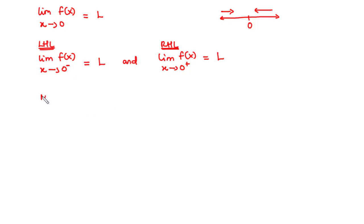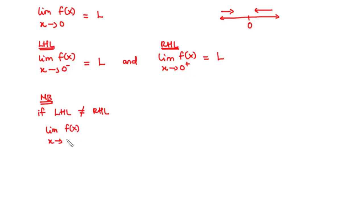Notice that if the left-hand limit is not equal to the right-hand limit, then the general limit of the function f of x as x approaches 0 does not exist. Now, let's try a couple of examples.